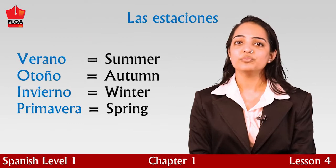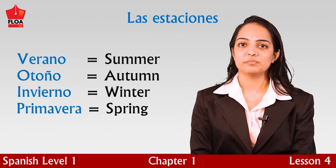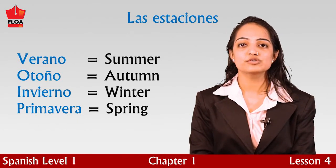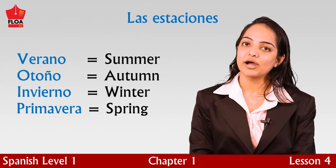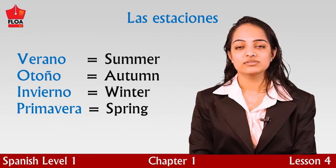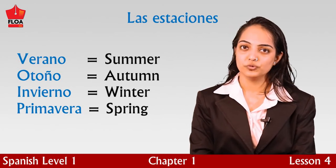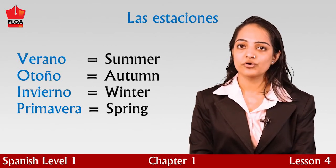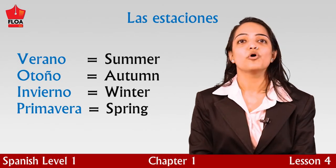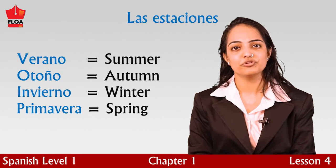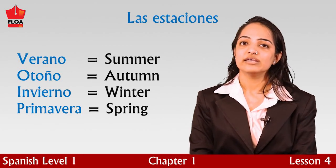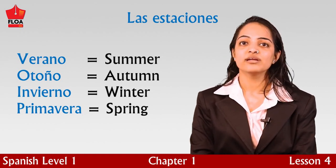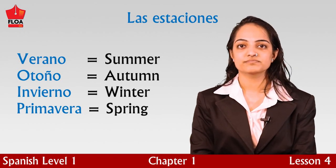Bien. Now that we know all the seasons, let us summarize them. Primavera — that is Spring — comes in the months of Marzo, Abril, and Mayo. Verano — that is Summer — comes in the months of Junio, Julio, and Agosto. Otoño — which is Autumn — comes in the months of September, October, and November. And finally, Invierno — that is Winter — comes in the months of December, Enero, and February. Adios.